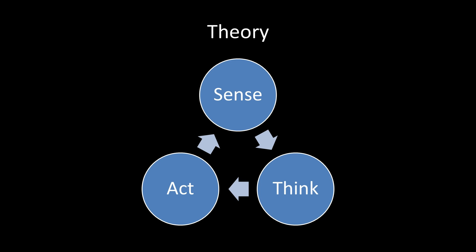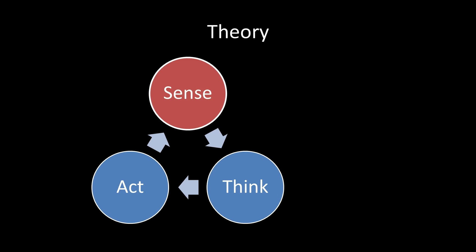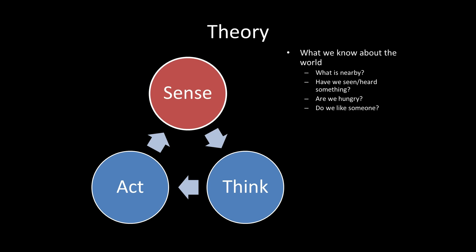Looking at the sensory part for Unreal, the kinds of things we want to know include what's nearby to us as a character, have we seen or heard anything, internal states like hunger, and classifications such as do we like something or have memory associated with something. Those are the things we store data about so the decision-making cycle can use them. Generally that sensory information is stored in a thing called a blackboard.